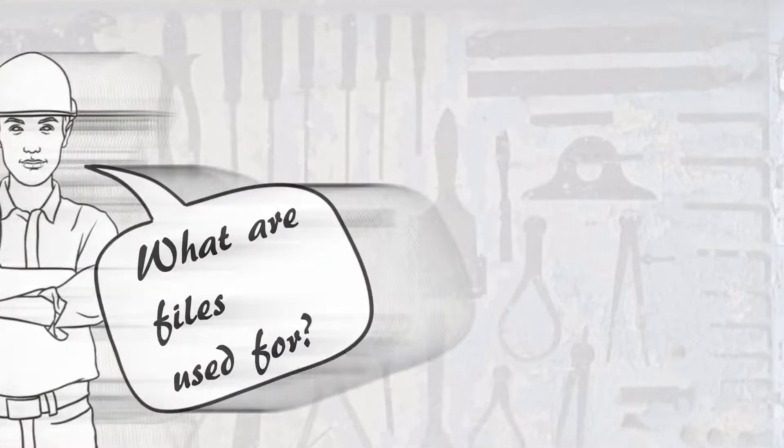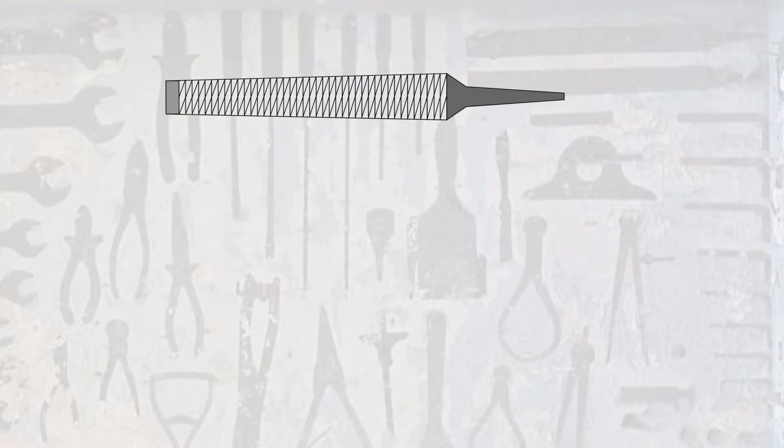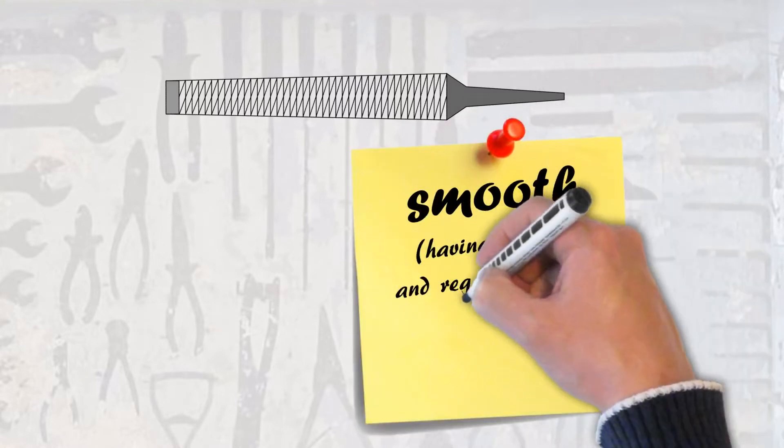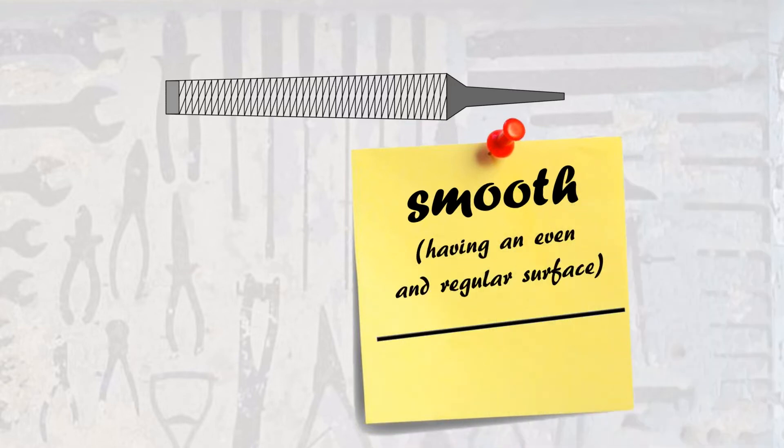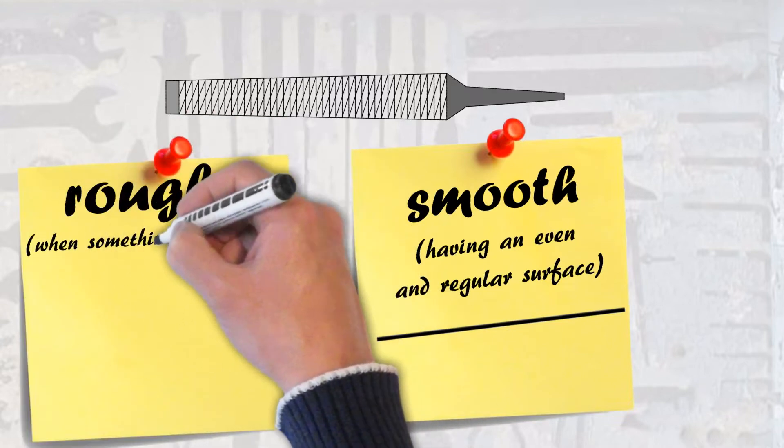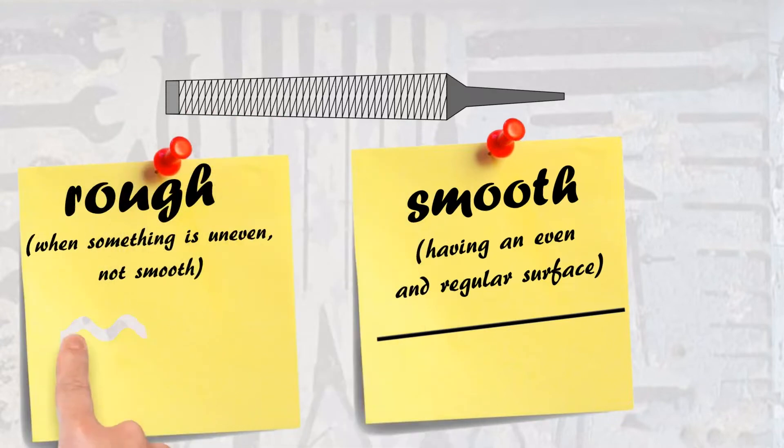What are files used for? Files are used to smooth something that is rough. Smooth is having an even and regular surface, while rough is when something is uneven and not smooth.